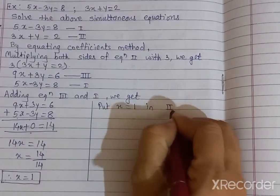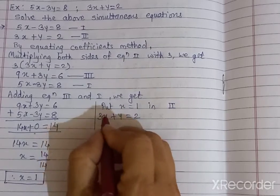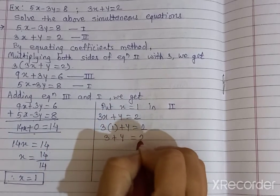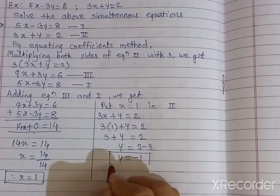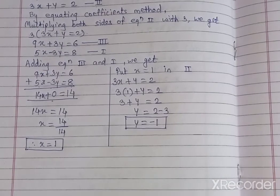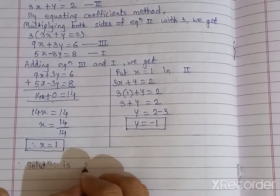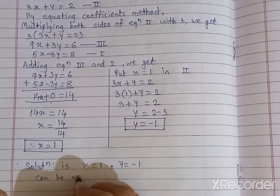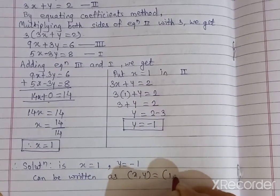I am going to substitute in equation 2, which is 3x plus y is equal to 2. So 3 times 1 plus y is equal to 2, giving 3 plus y equals 2, so y is equal to 2 minus 3, which is minus 1. Therefore the solution of the given simultaneous equations is x is equal to 1 and y is equal to minus 1.